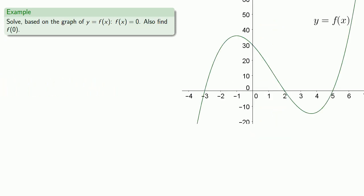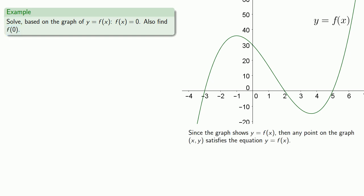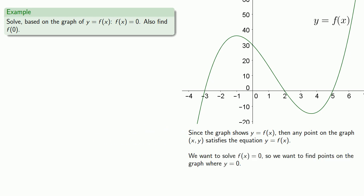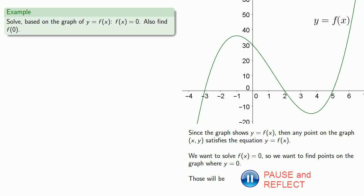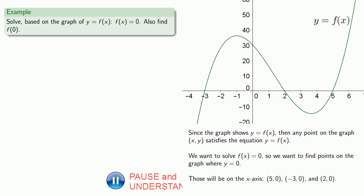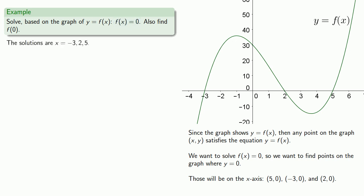Let's see if our picture — our geometry — can give us some insight into our words, the algebra. Here we have a graph, and let's see if we can solve, based on the graph of y equals f of x, f of x equals zero. Also, let's find f of zero. Since the graph shows y equals f of x, any point (x, y) on the graph satisfies y equals f of x. We want to solve f of x equals zero — equals means replaceable — so we want to find points on the graph where y equals zero. Those points will be on the x-axis: (5, 0), (-3, 0), and (2, 0). Because we're solving an equation in x, we only need the x-values. So the solutions are negative 3, 2, and 5.